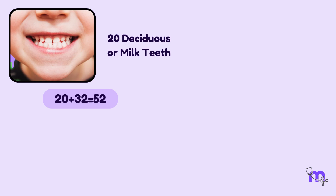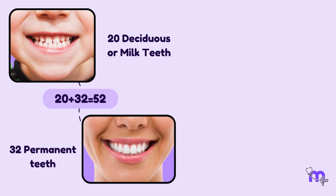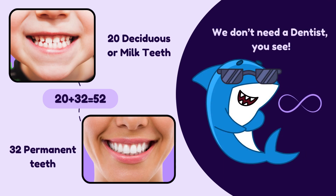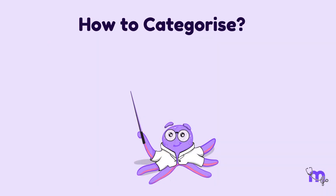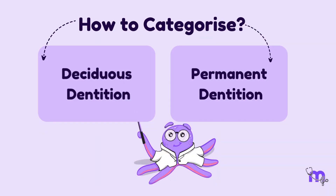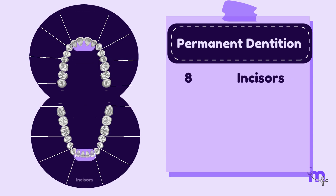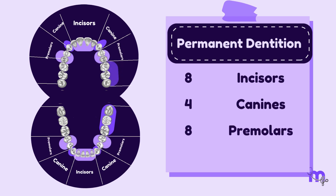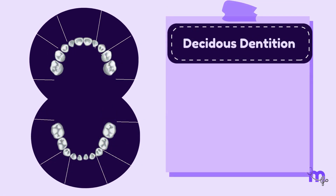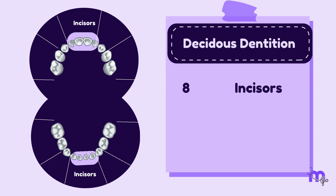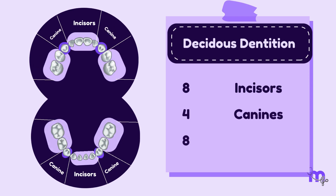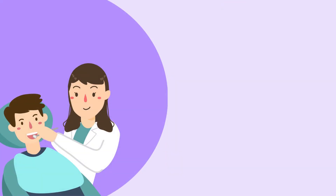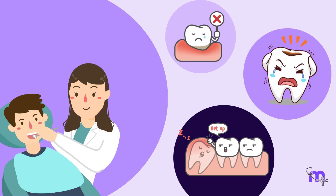As humans, we have two sets of teeth: 20 deciduous or milk teeth and 32 permanent teeth. Sharks, however, have an infinite number of sets of teeth. Let us see how we can categorize permanent and deciduous dentition. Permanent dentition is distributed across four categories: eight incisors, four canines, eight premolars, and twelve molars. Deciduous dentition has eight incisors, four canines, and eight molars.